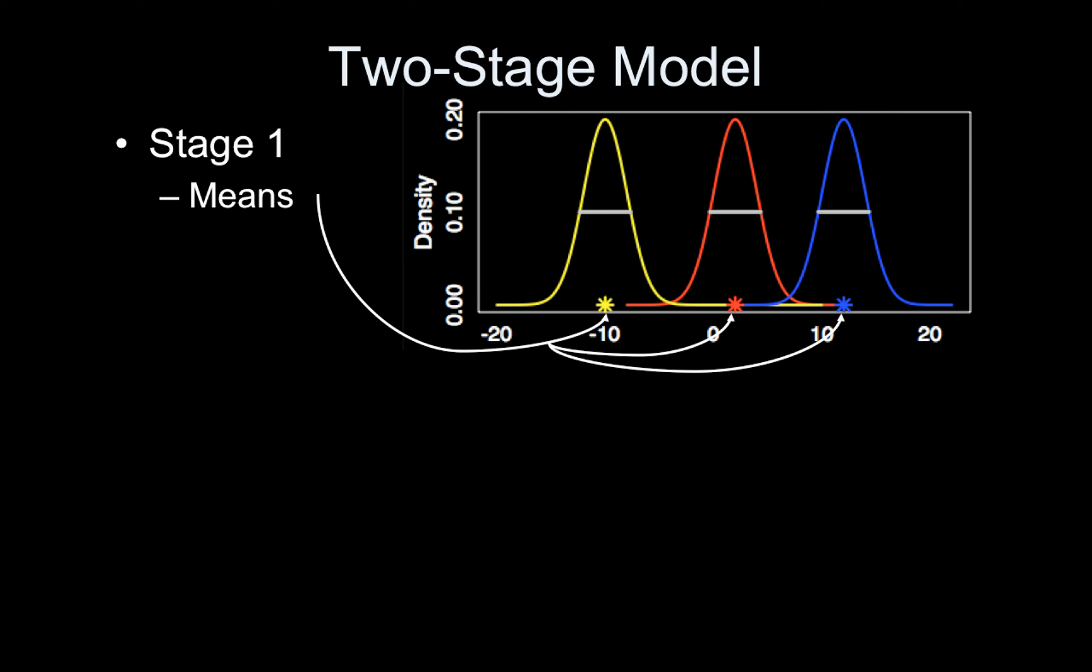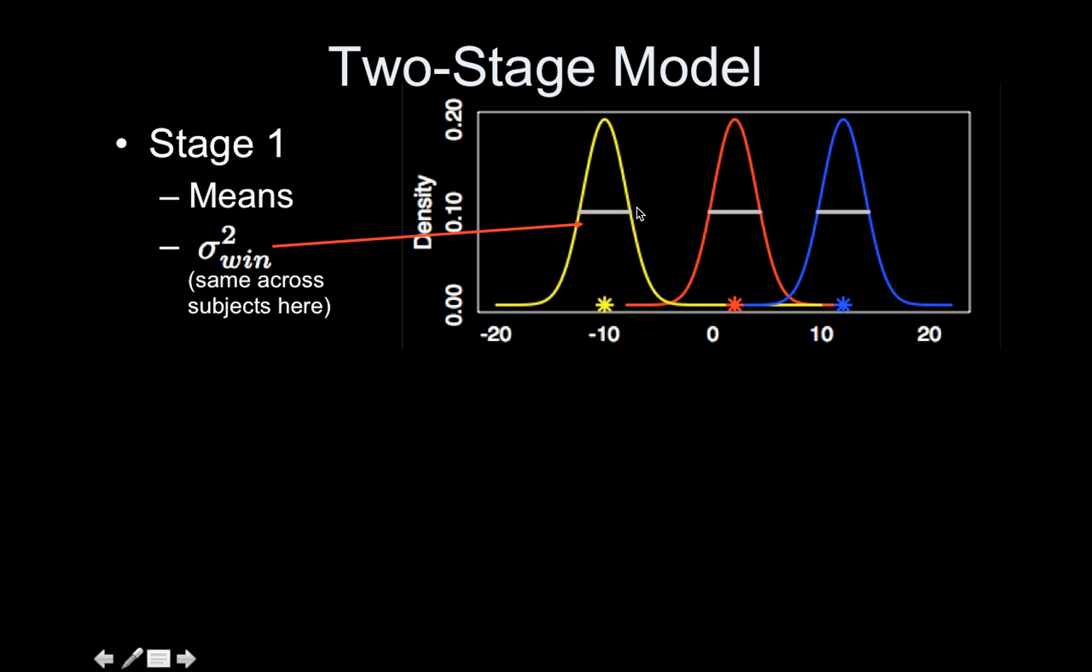So just to break that down again, the first step, we estimate the mean of each distribution, as indicated by these little asterisks, and then we estimate the within-subject variances of the distribution. For this cartoon example, we're assuming it's the same for all subjects. At the second stage, we estimate a between-subject variance.